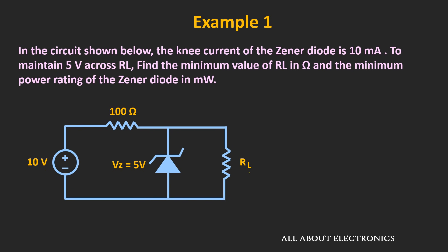For the given regulator circuit, let's write down all the currents. Is is the current supplied by the voltage source, and Iz and Il are the currents flowing through the Zener diode and load resistor respectively. So Is = Iz + Il. Since the voltage source and series resistor are fixed, Is will remain fixed.